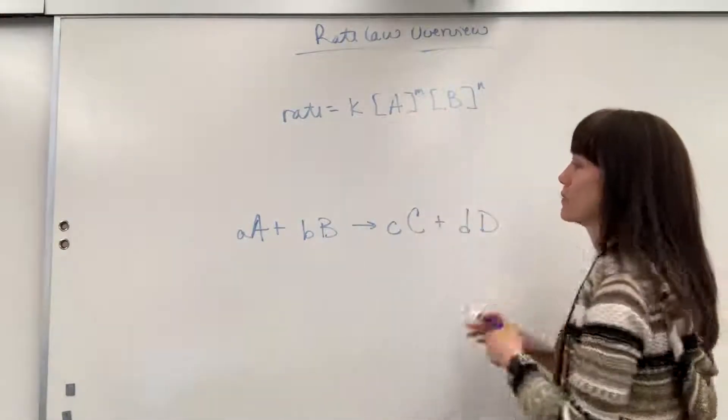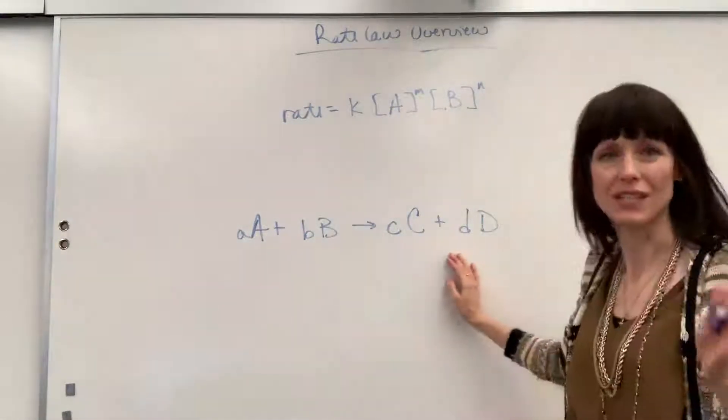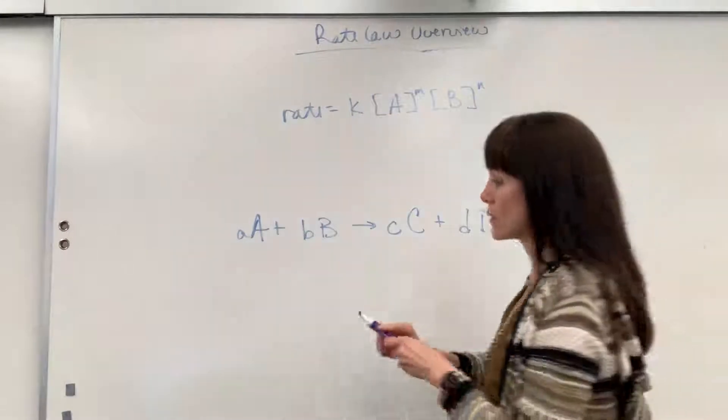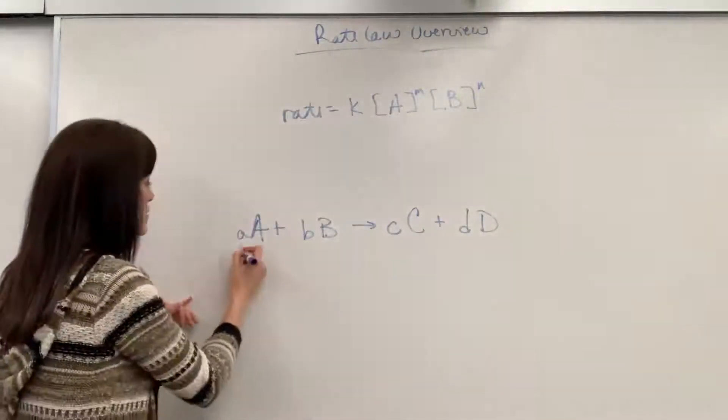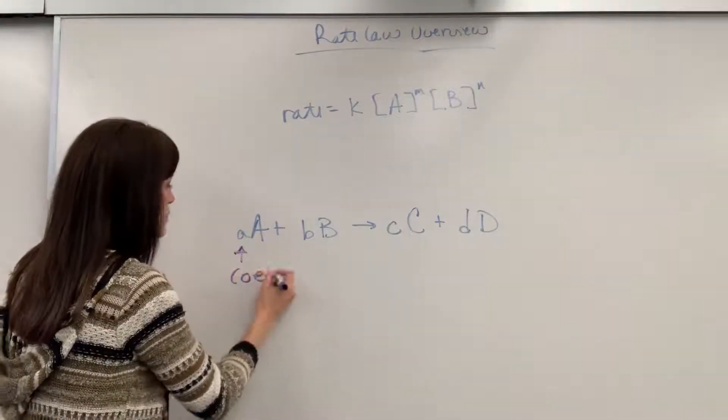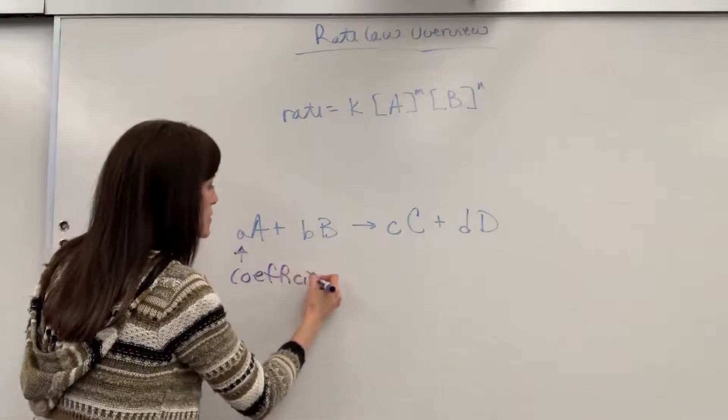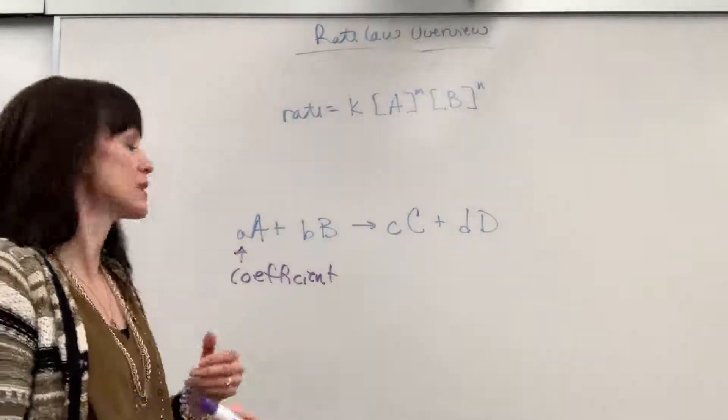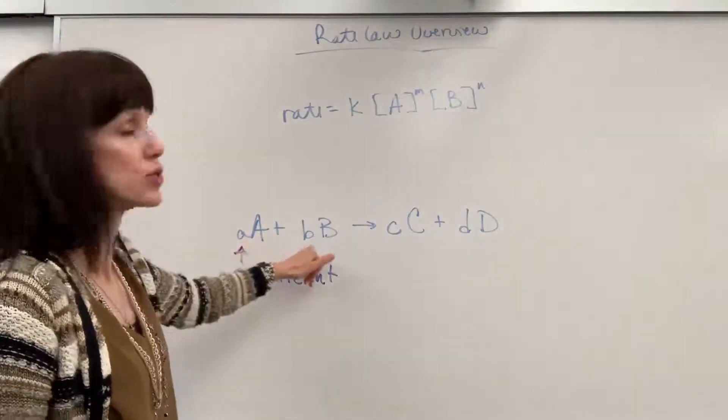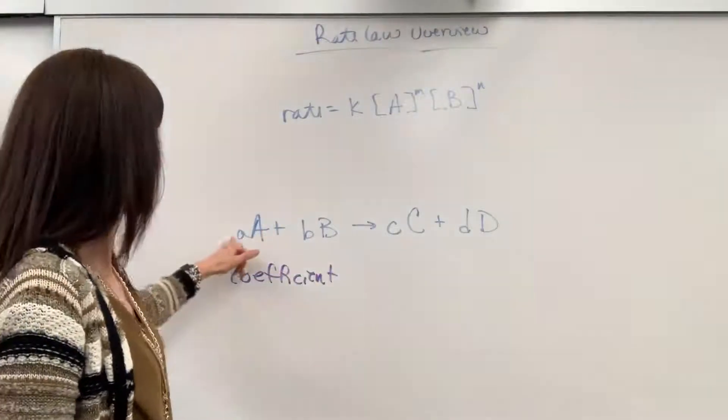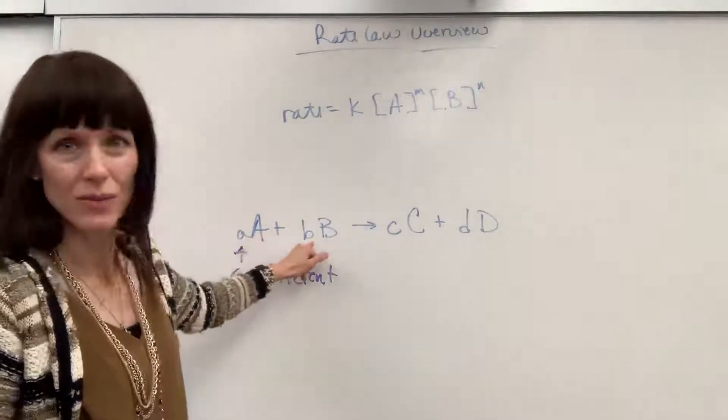Now, where did that A and B come from? This is going to be our generic equation. Notice the lowercase letters are going to represent the coefficients. So those are your numbers, like one mole, two moles. I could have one mole of A plus two moles of B. So my little a would be one, my little b would be two.